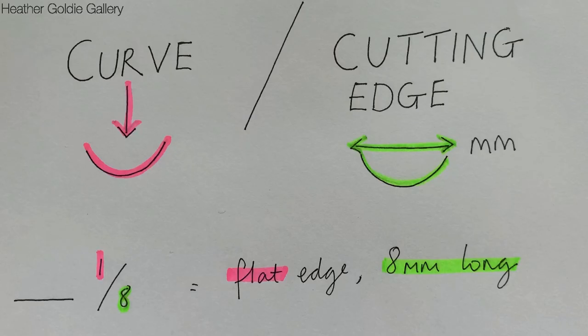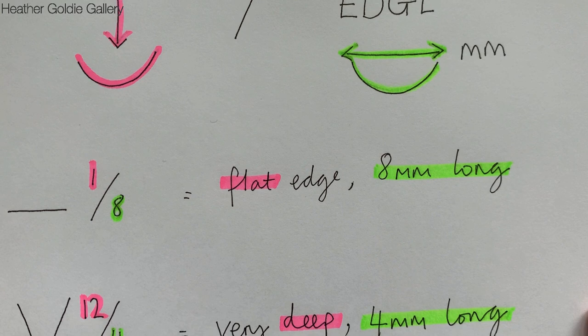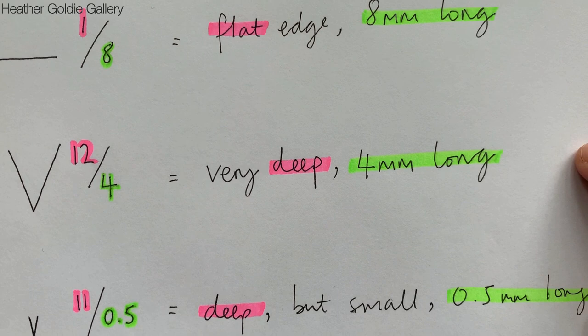The sizes and shapes of gougers can be confusing, so here's a quick breakdown. Each tool is numbered to show size and shape of the depth, curvature, and length of the cutting edge.